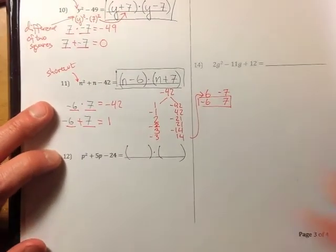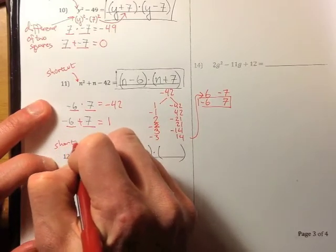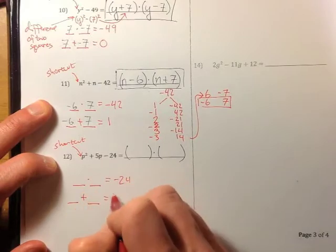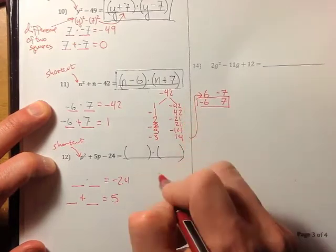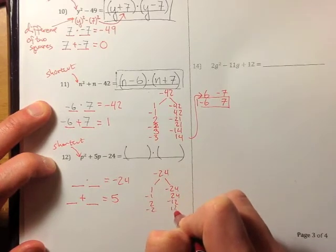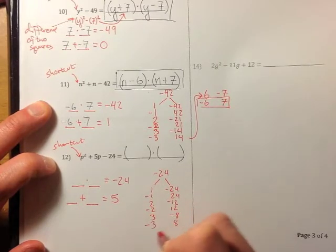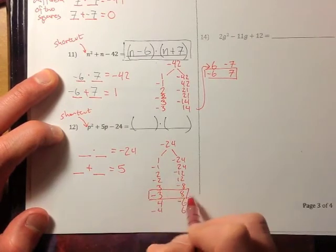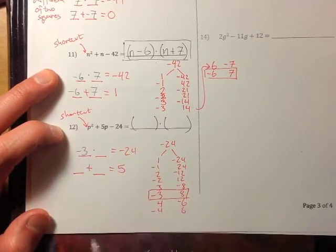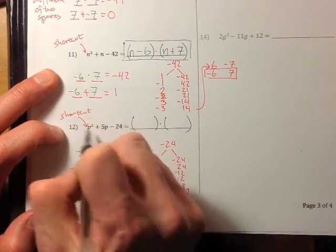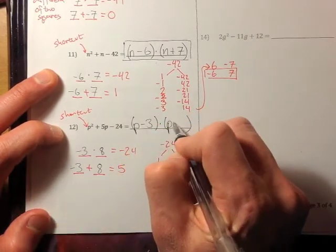Let's do this last one. Shortcut: what times what equals negative 24, and those same two numbers added together equals 5. Nothing immediately sticks out, so let's make a list of factor pairs of negative 24: 1 and negative 24, negative 1 and positive 24, 2 and negative 12, negative 2 and positive 12, 3 and negative 8, negative 3 and positive 8, 4 and negative 6, negative 4 and positive 6 — and that's the list. Negative 3 and positive 8 works: negative 3 times positive 8 is negative 24, and negative 3 plus 8 is 5. Because we can use the shortcut, we put in P minus 3 times P plus 8, and we're done.